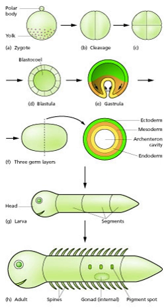The main processes involved in the embryonic development of animals are: regional specification, morphogenesis, cell differentiation, growth, and the overall control of timing — explored in evolutionary developmental biology.